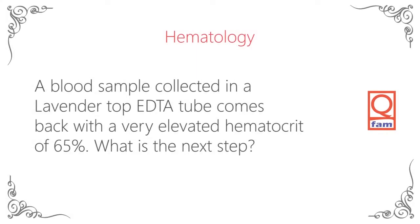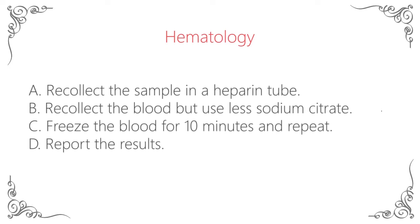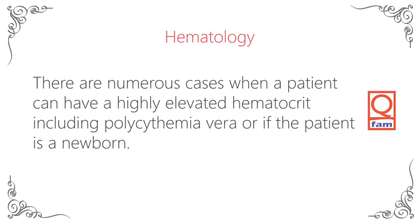A blood sample collected in a lavender top EDTA tube comes back with a very elevated hematocrit of 65%. What is the next step? A. Recollect the sample in a heparin tube. B. Recollect the blood but use less sodium citrate. C. Freeze the blood for 10 minutes and repeat. D. Report the results. The answer is D — report the results. There are numerous cases when a patient can have a highly elevated hematocrit, including polycythemia vera or if the patient is a newborn.